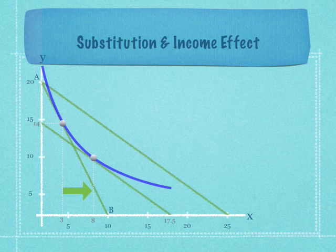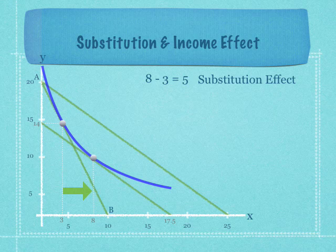The substitution effect is the change in the marginal rate of substitution or the slope of the line. So the consumer moves down the indifference curve. The substitution effect is 8 minus 3 or 5. That's the substitution effect.